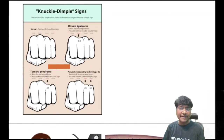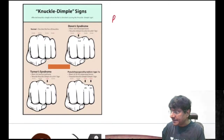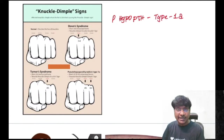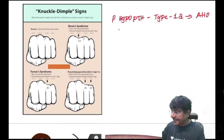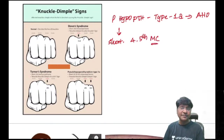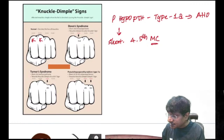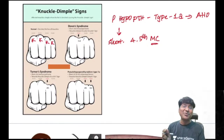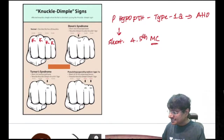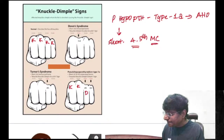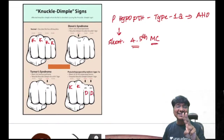In pseudo-hypoparathyroidism type 1A, patients have short 4th and 5th metacarpal bones. When making a fist, they show the knuckle-knuckle-dimple-dimple sign. In Down syndrome (short 3rd metacarpal) the sign is knuckle-dimple-knuckle-knuckle. In Turner syndrome (short 4th metacarpal) the sign is knuckle-knuckle-dimple-knuckle.